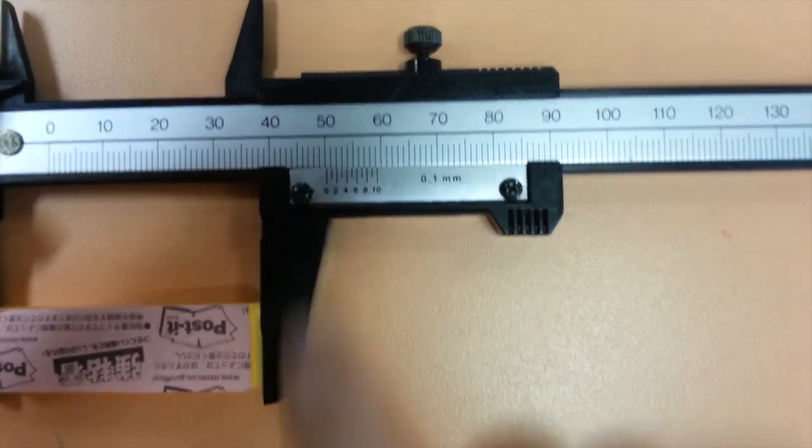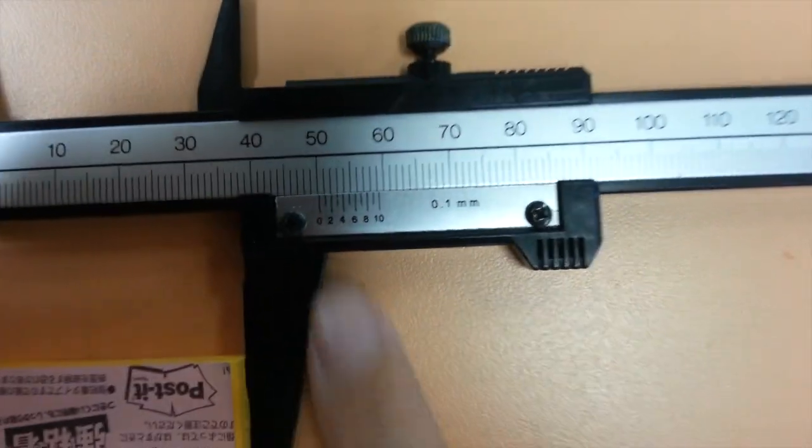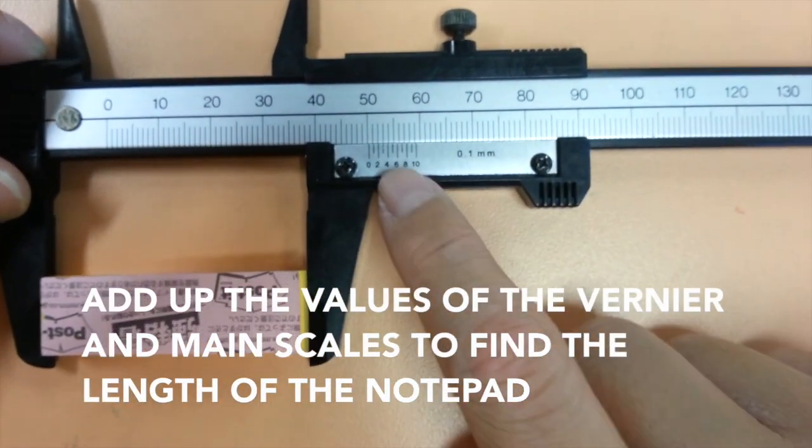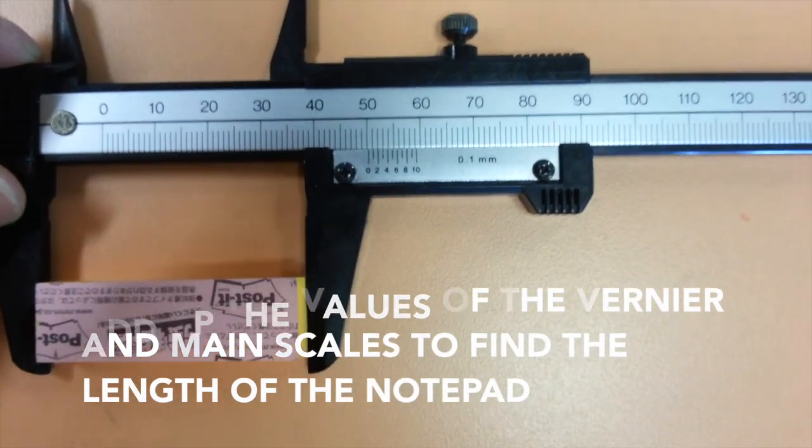As for the notepad, the value on the vernier scale is 0.2 mm. Finally, the length is found by adding the values of the vernier and main scales, which for the notepad is 50.2 mm.